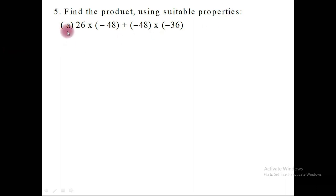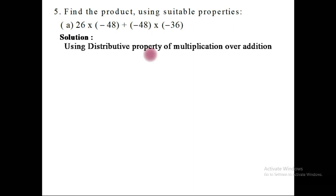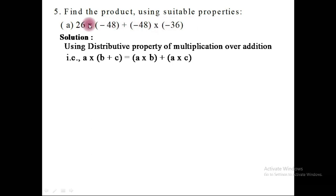Sub number A. The given expression is 26 multiplied with minus 48, plus minus 48 multiplied with minus 36. Here we can use the distributive property of multiplication over addition. We will rearrange the given expression in the form of the right-hand side of the distributive property.